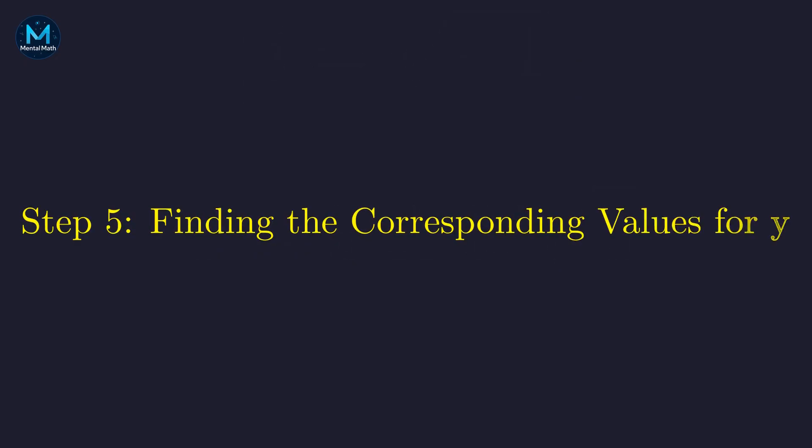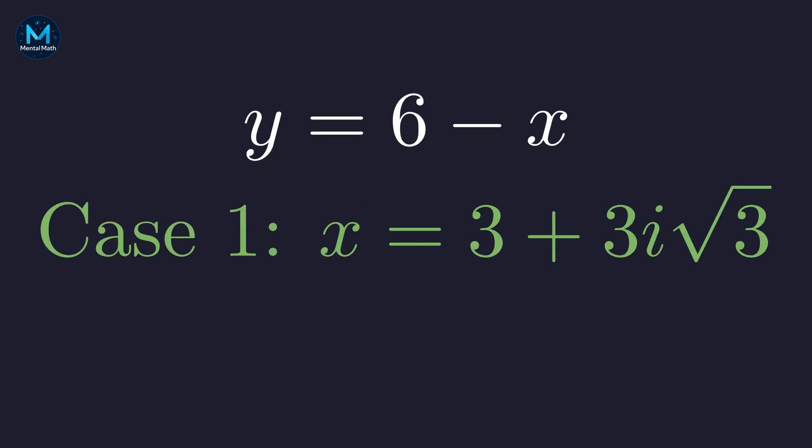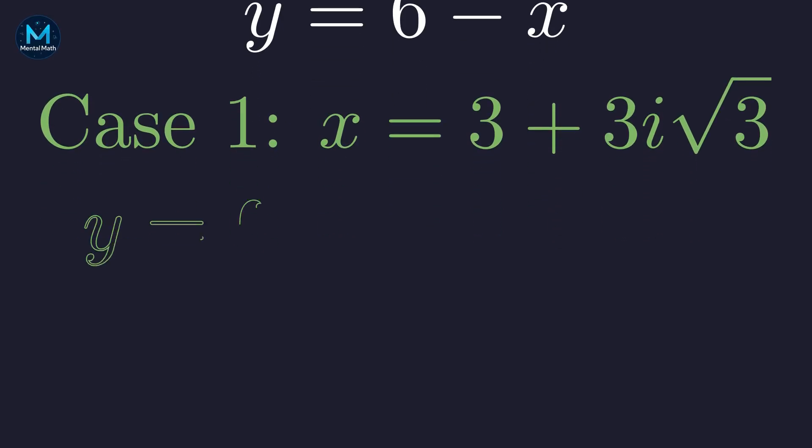Now we need to find the corresponding y values for each x solution. Remember, y equals 6 minus x from our original substitution. Let's start with the first case where x is 3 plus 3i root 3. Substituting this into our equation for y, distributing the negative sign, and combining like terms gives us 3 minus 3i root 3.